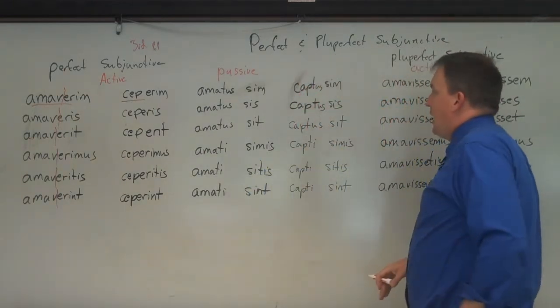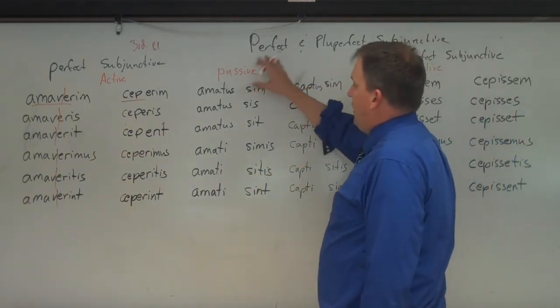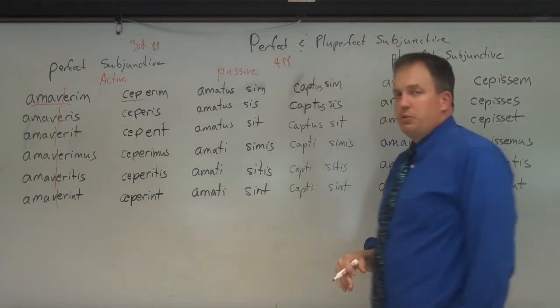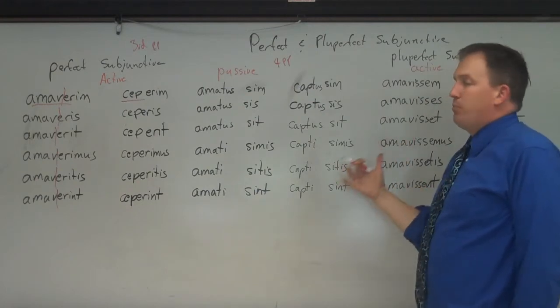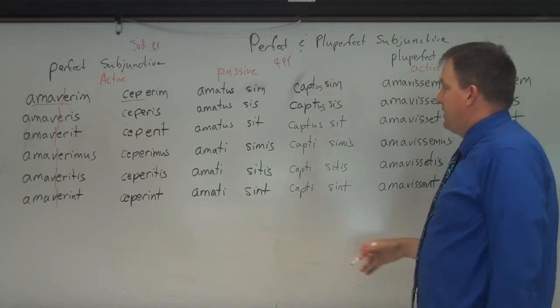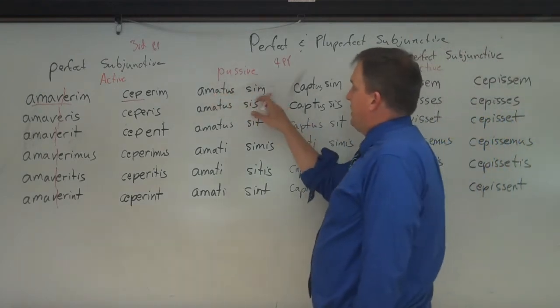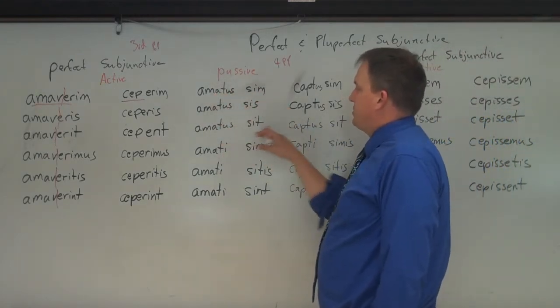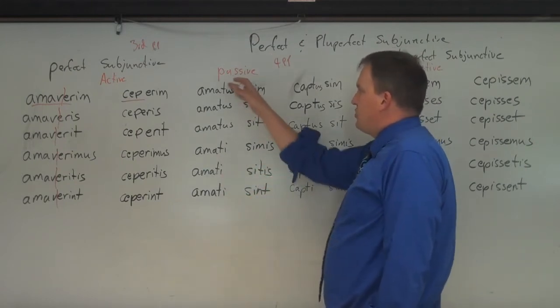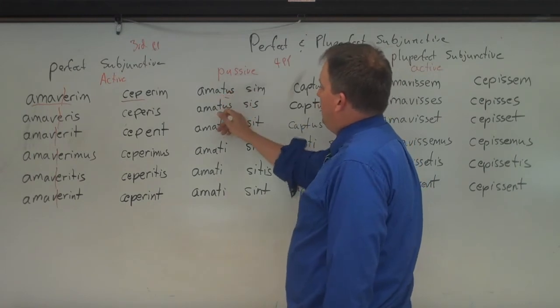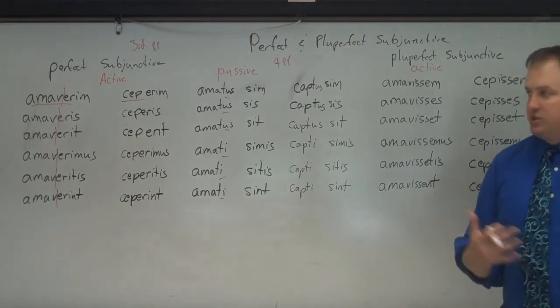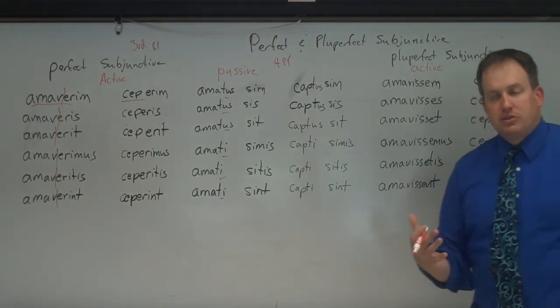And then for the passive, you just take the fourth principal part, and then you use the present form of sum. Instead of sum, you say sim. So you go amatus sim, amatus sis, amatus sit, amati simus, amati sitis, amati sint. Now, of course, you can change the endings here of the perfect passive participle, just according to what the subject is. You can make it into feminine or neuter, depending on what the subject.